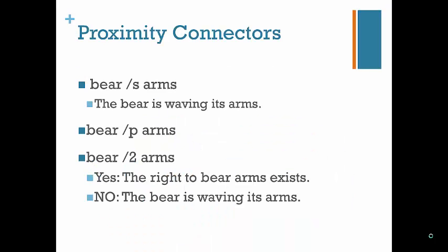Proximity connectors return results where the first term is within some proximity from another term. Commonly, these are represented by /s for sentence, /p for paragraph, or /n where n is some number. For example, bear /s arms returns results where the word bear is in the same sentence as arms. And bear /2 arms returns results that have the word bear within two words of the word arms — so the right to bear arms would be included, but the bear waving its arms would not. These connectors operate without regard to word order, so arms could come before bear. If you want word order to matter, use a plus sign instead of a slash.